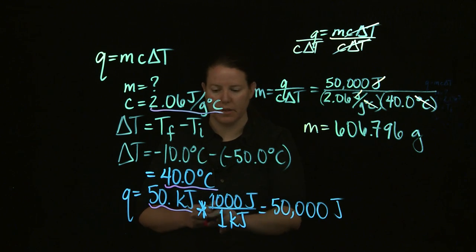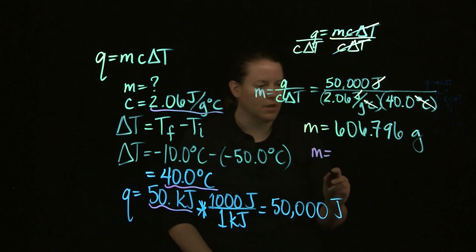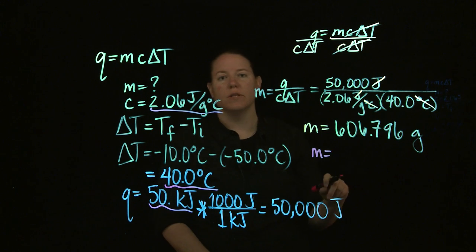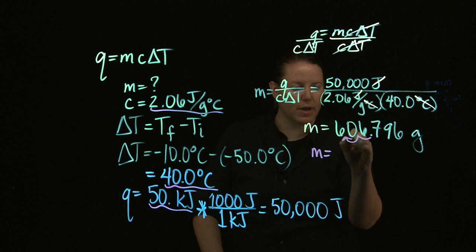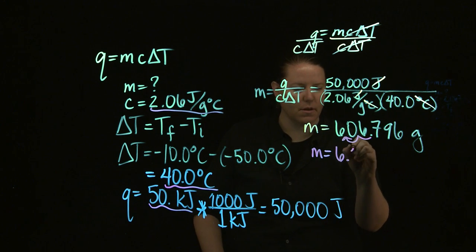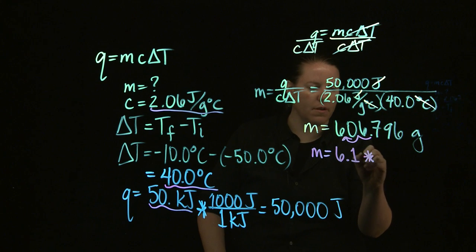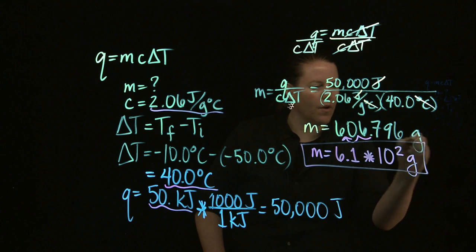Which means that the only way I can do this is in scientific notation. Changing it to scientific notation means you move that decimal point to the immediate right of the leftmost non-zero digit. I get 6.1 times 10 to the second grams.